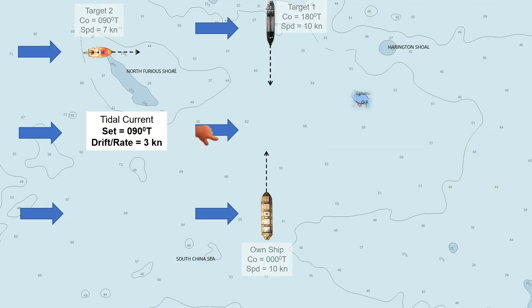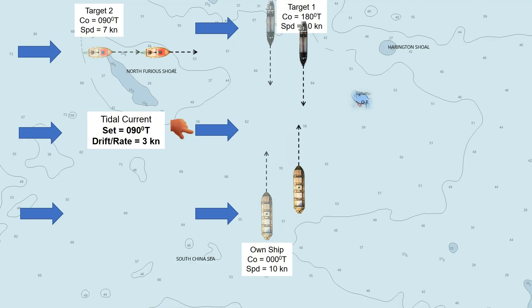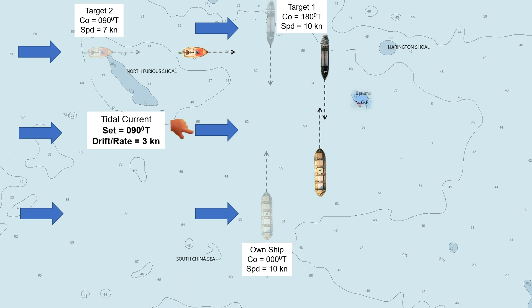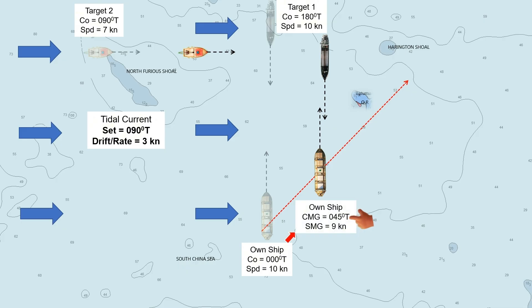This is the actual movement of our ship and other moving targets when they are sailing, due to the effect of the existing current in the locality. Our ship is making a course made good of 045 degrees true and speed made good of 9 knots. The course made good and speed made good of own ship and other moving targets are approximations, with values intentionally given at large angles to emphasize the effect of tidal current.